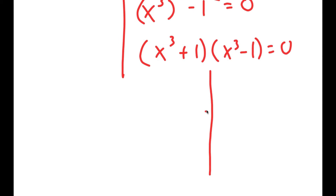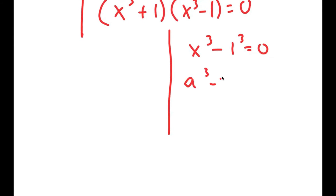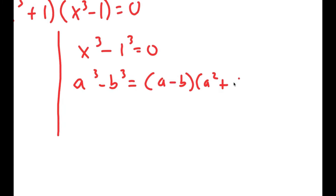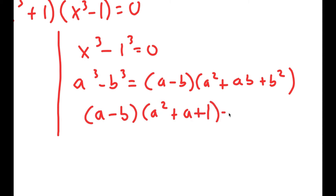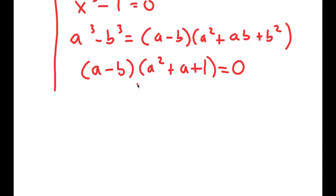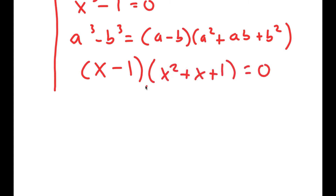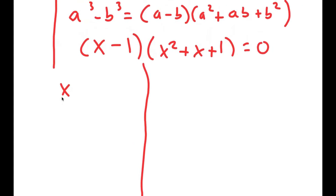Now for x to the power of 3 minus 1 equals 0, I'm going to rewrite this as x to the power of 3 minus 1 to the power of 3, equals 0. So I can use the property a cubed minus b cubed equals a minus b times a squared plus ab plus b squared. This turns into x minus 1 times x squared plus x plus 1, equals 0, which gives me two more equations.